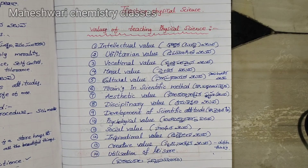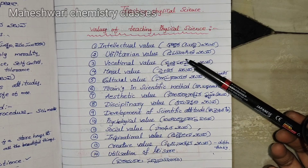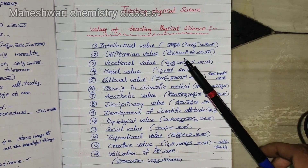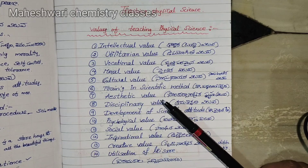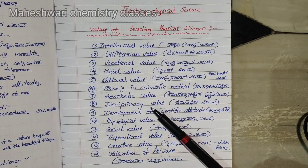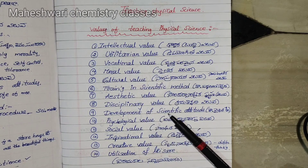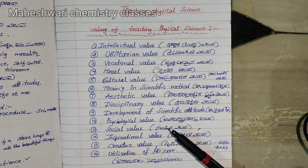These 14 points are the values of teaching physical science: intellectual value, utilitarian value, vocational value, moral value, cultural value, training in scientific method, aesthetic value, disciplinary value, development of scientific attitude, psychological value, social value, inspirational value, and creative value.